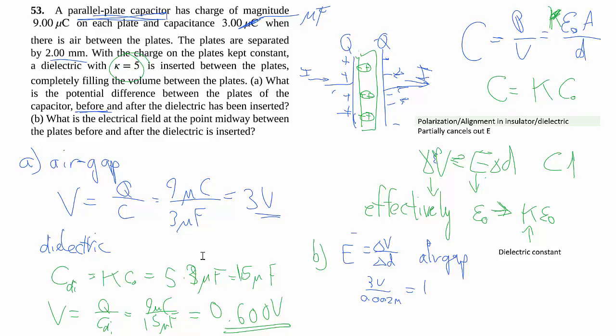For the case with the dielectric, the voltage is 5 times as small. The electric field is also 5 times as small, once again demonstrating that partial cancellation. So that's how we deal with dielectric. Every time you see epsilon naught, you replace with kappa epsilon naught, and you're good to go.